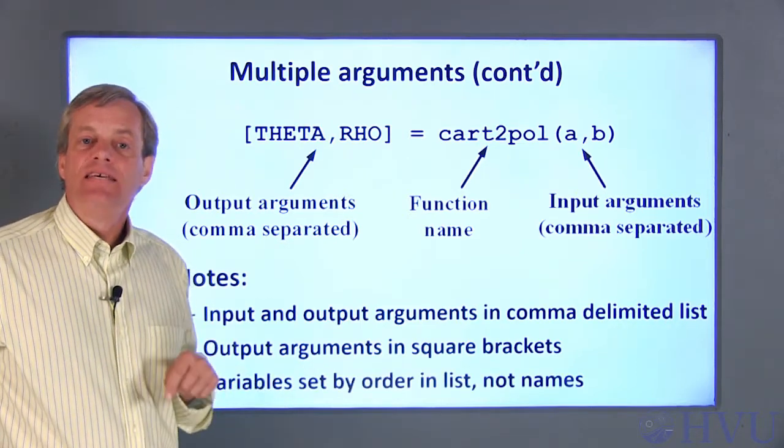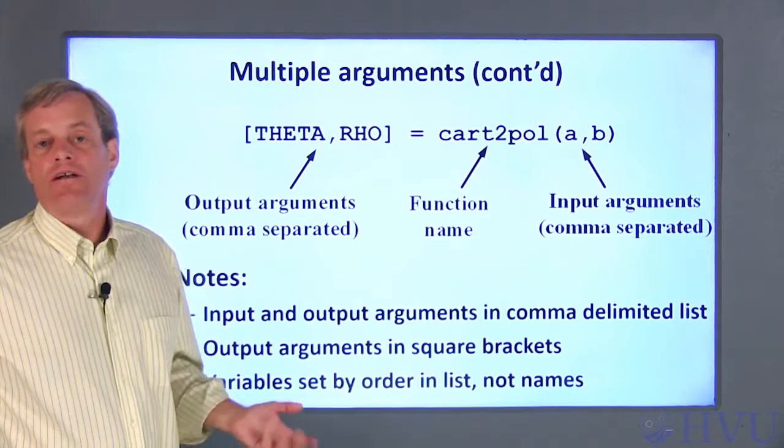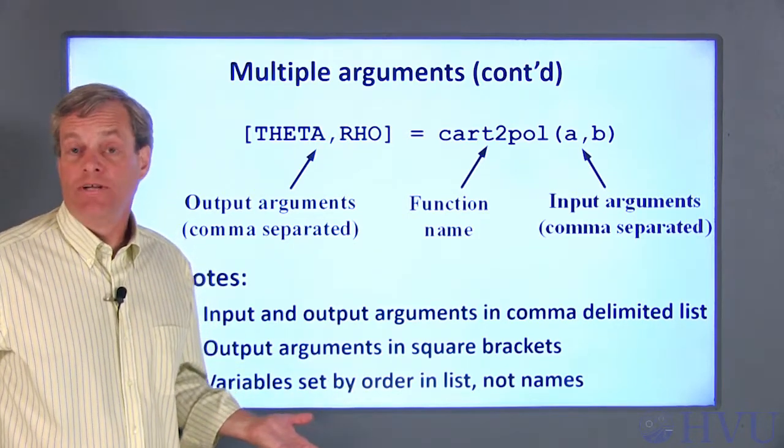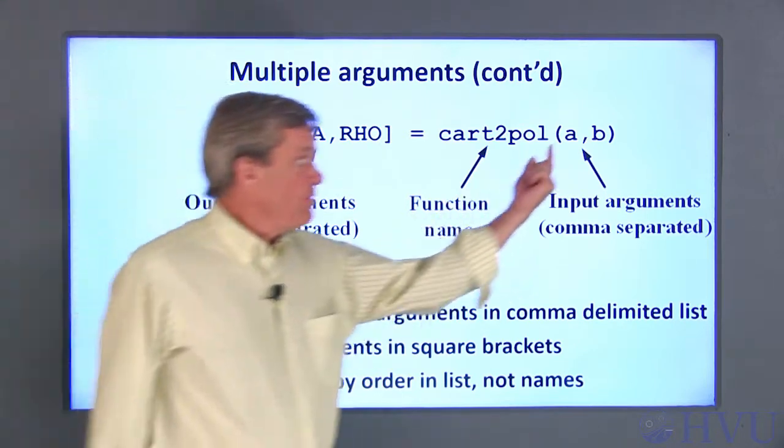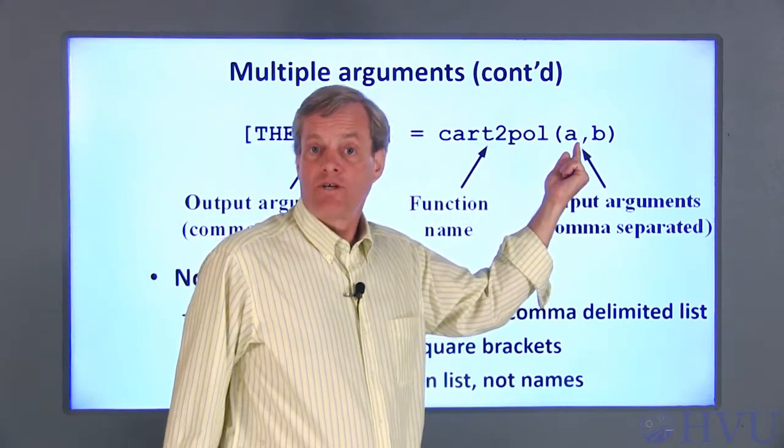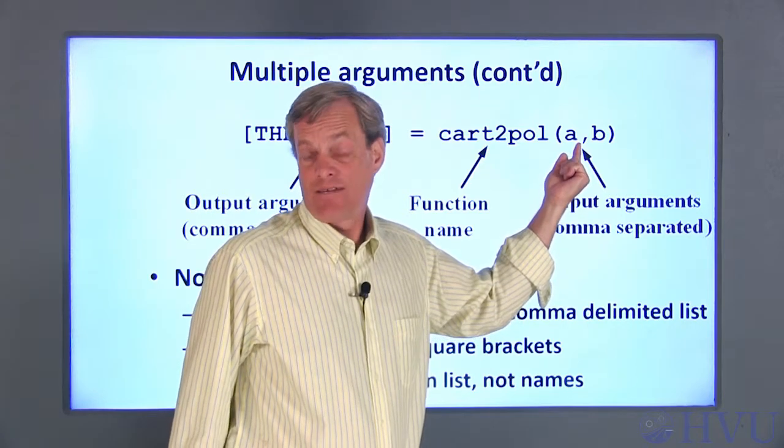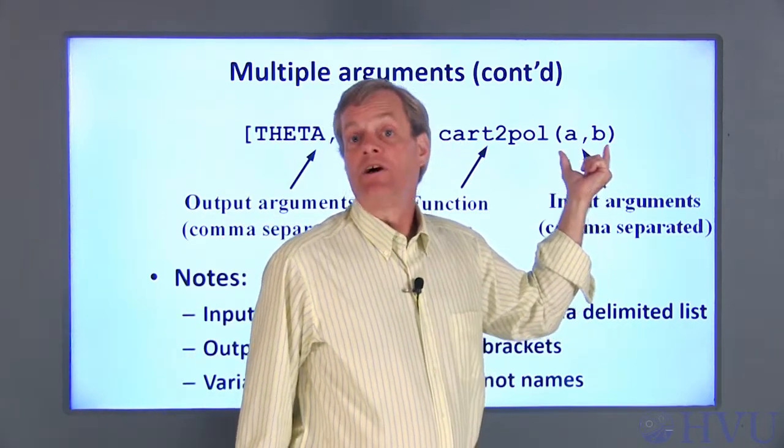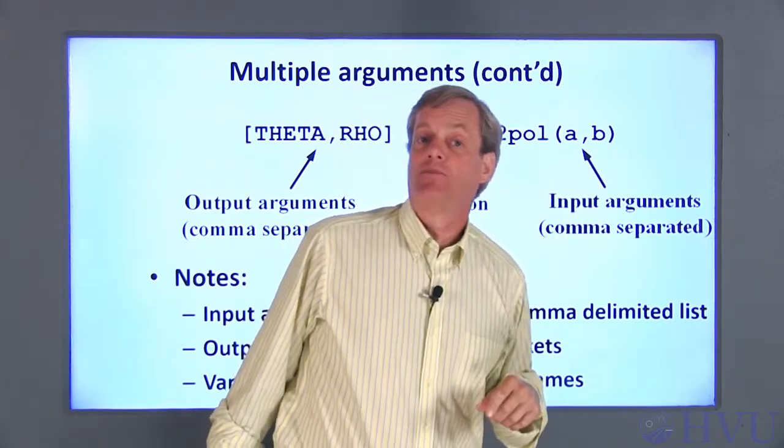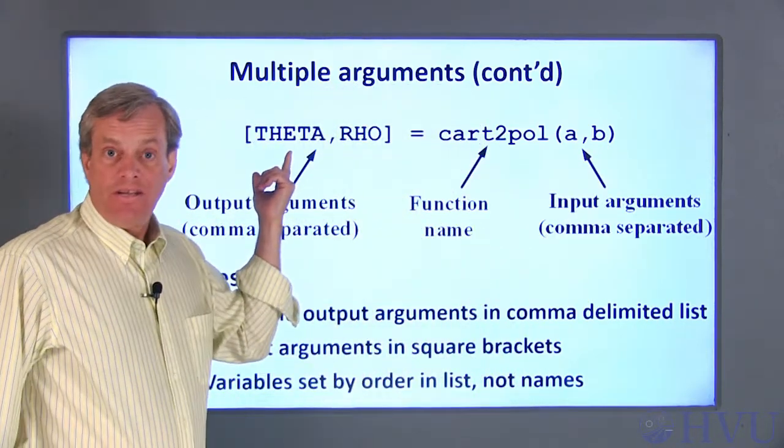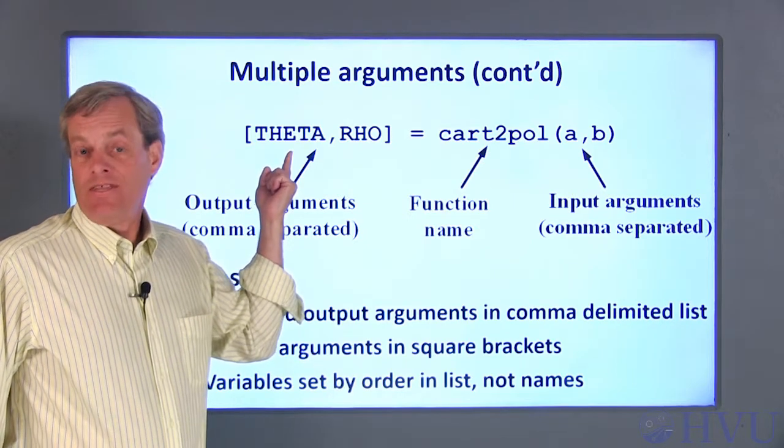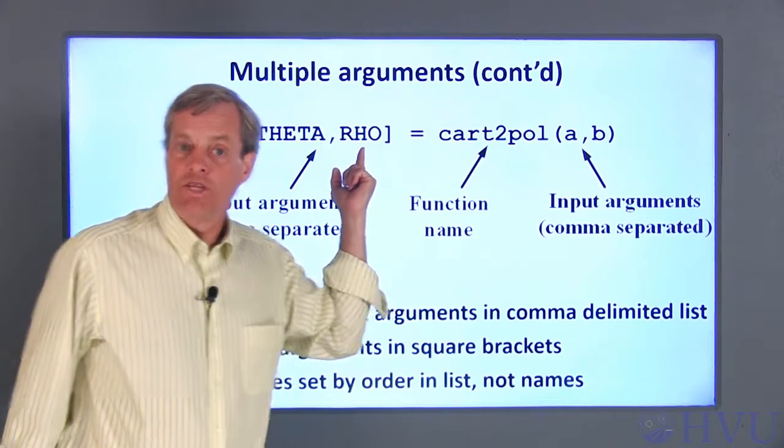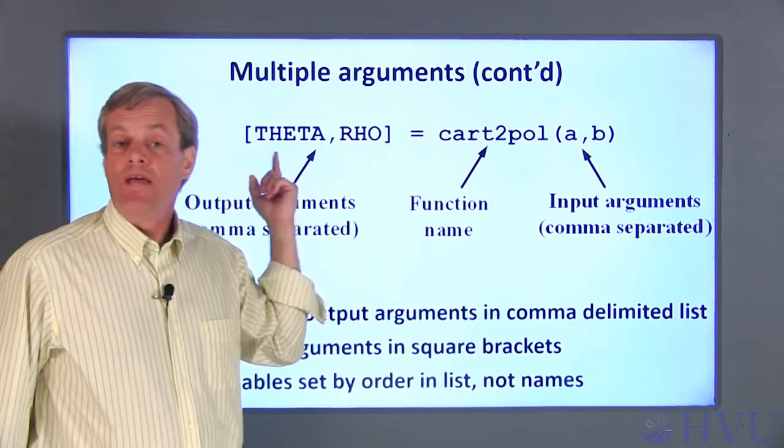Importantly, please keep in mind that the arguments are set according to their order in the list, regardless of the variable names. The first argument in the input argument list will always be interpreted by the function as the x-axis coordinate and the second as the y-axis coordinate, regardless of the name of the variables. Likewise, the first argument in the output argument list is going to be the angular position, and the second argument is the radial position, no matter what you name the variables.